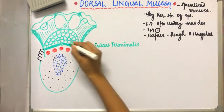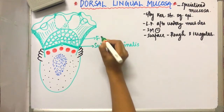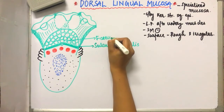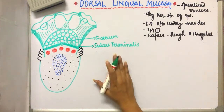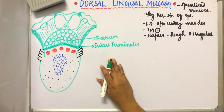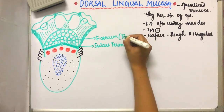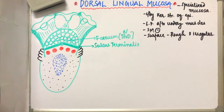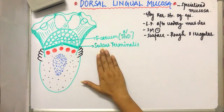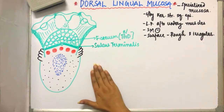Between the sulcus terminalis is the foramen cecum. It is the remnant of the thyroglossal duct. That is the foramen cecum, and the sulcus terminalis divides the dorsal lingual mucosa into its two regions.